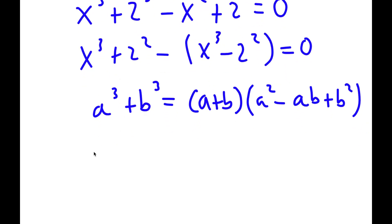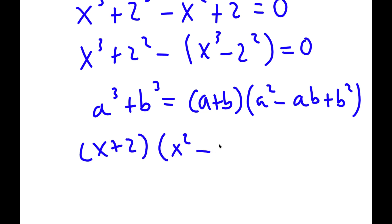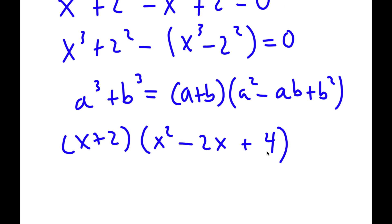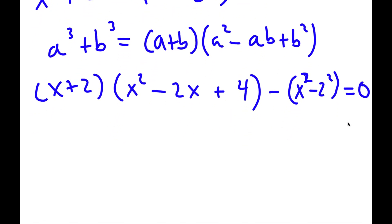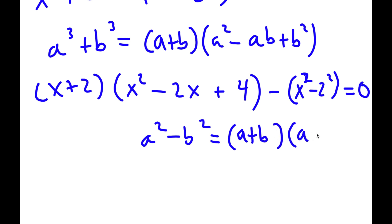In this case, this is going to equal x plus 2 times x squared minus 2x plus 2 squared, which is 4. I have this minus x to the power of 3 minus 2 squared, which is all equal to 0. Now, if I have something in the form a squared minus b squared, this is equal to a plus b times a minus b.